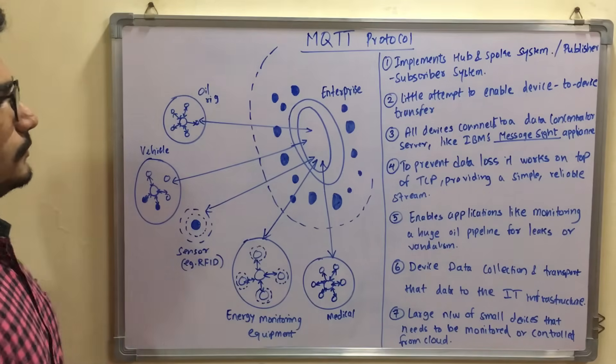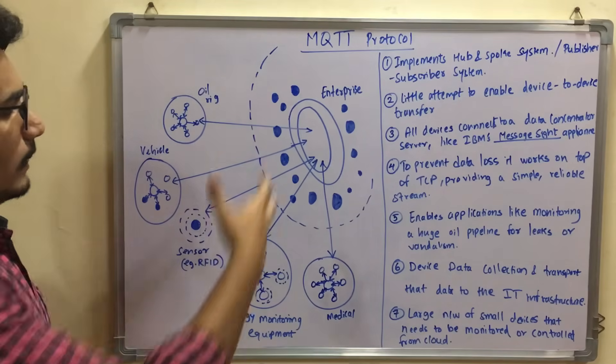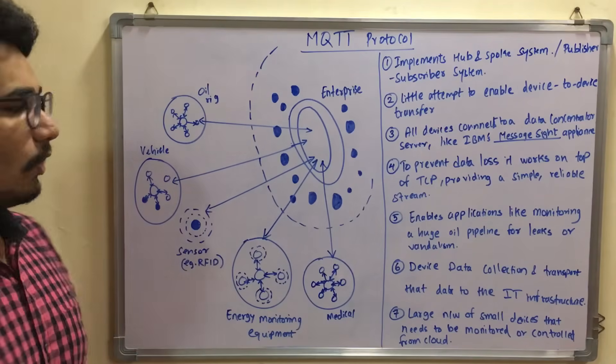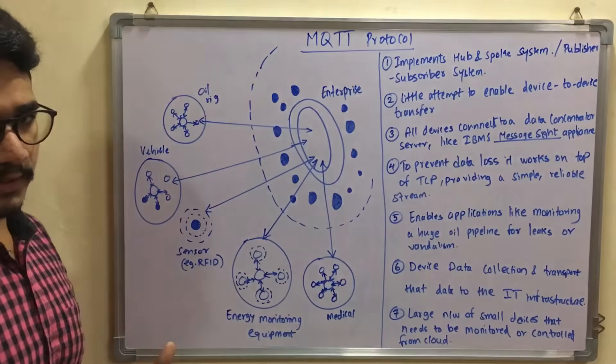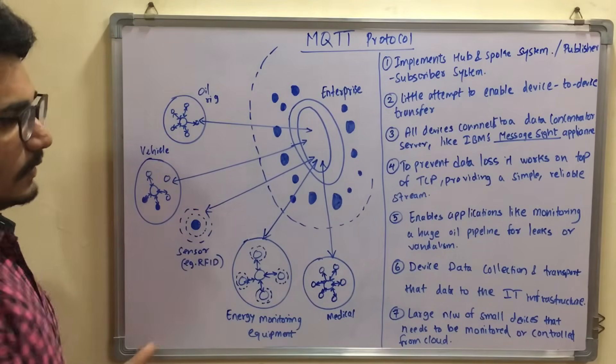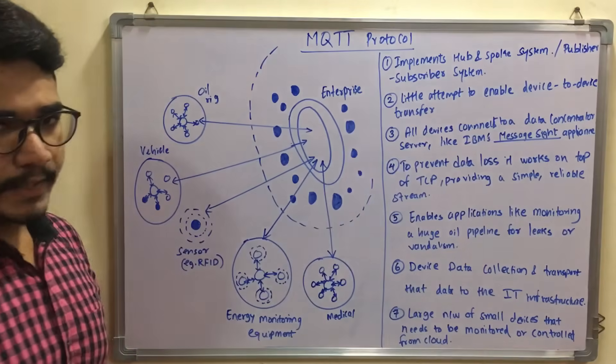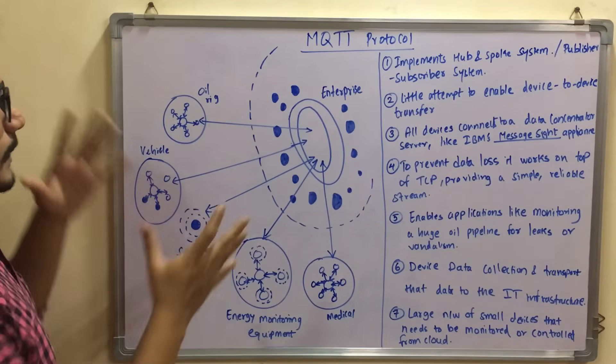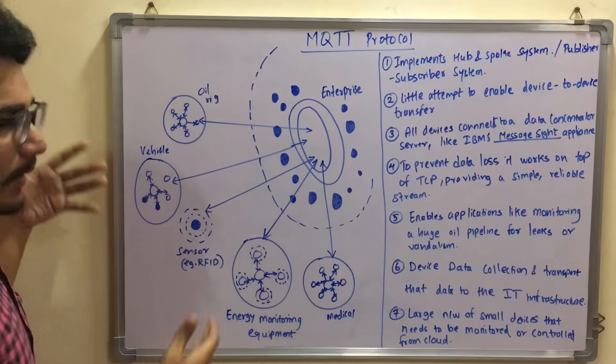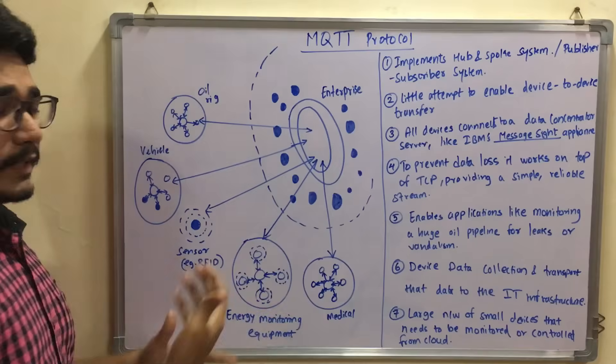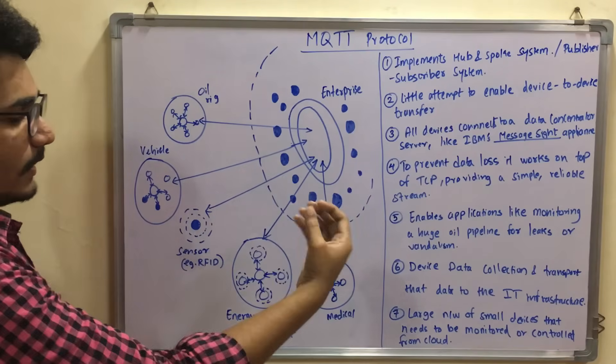Now we are back to this MQTT protocol. This messaging queue basically is used for data collection across different devices. For example, suppose there is a centralized concentrator. This is a concentrator, basically it can be IBM's Message Site Appliance or something like that. This is the newest kind of server which is used for MQTT protocol.